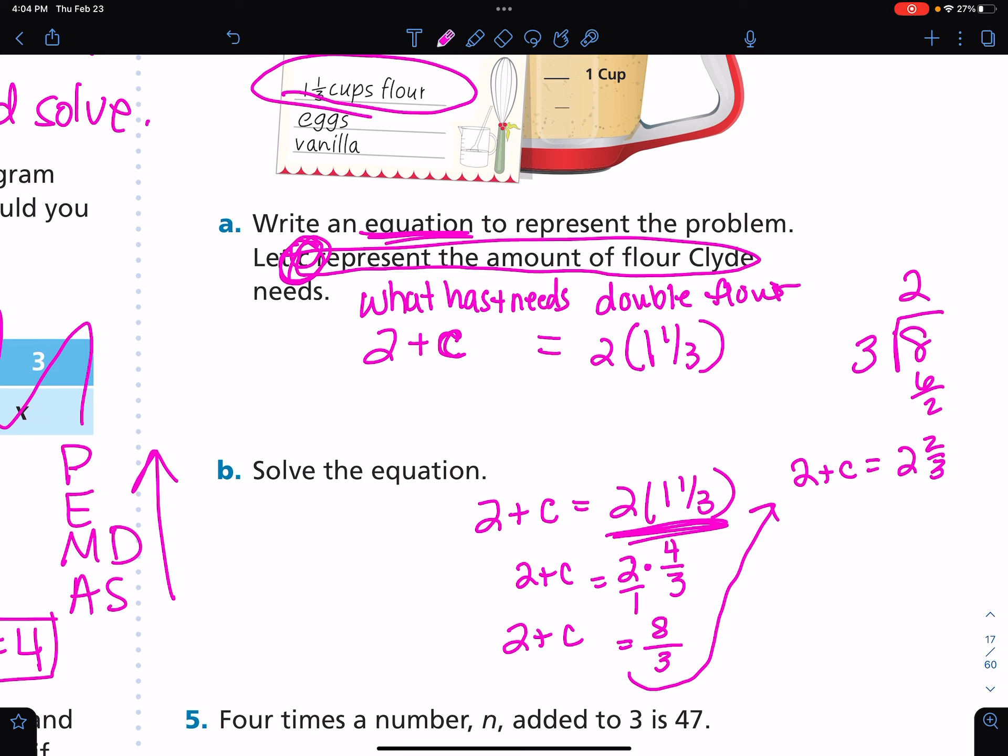So then I will move by using my inverse operation of this two. So I'm subtracting two from both sides. And I'm left with C equals two and two-thirds minus two means two-thirds. Clyde is short two-thirds cup flour.